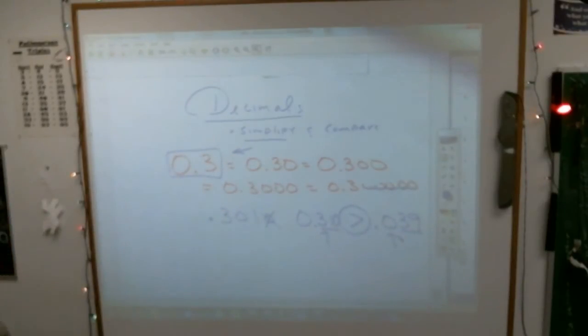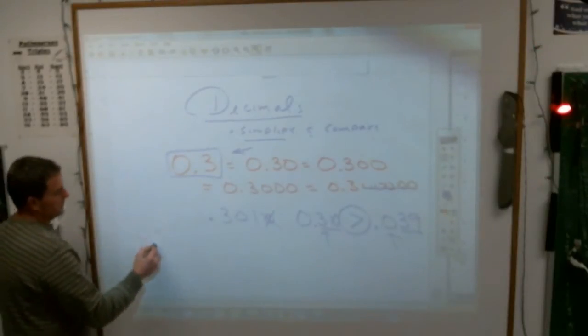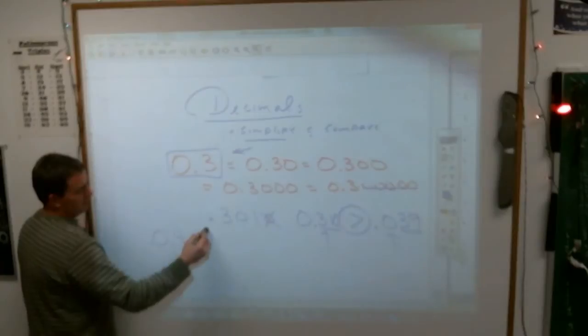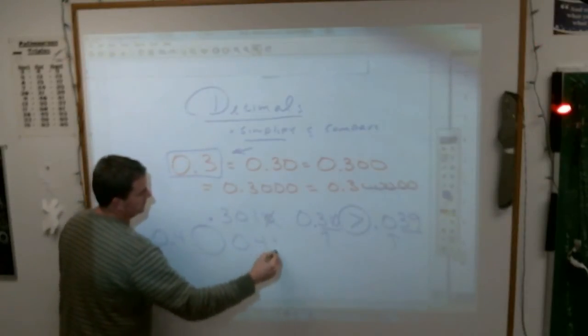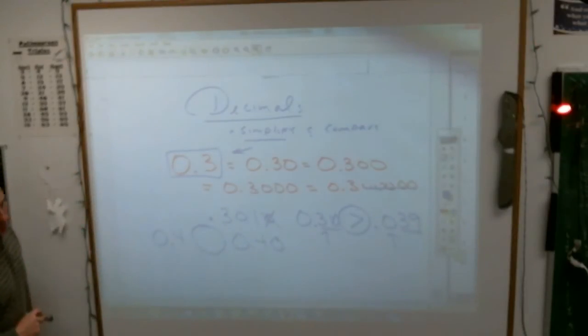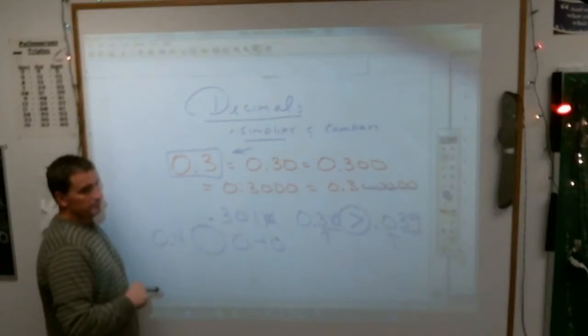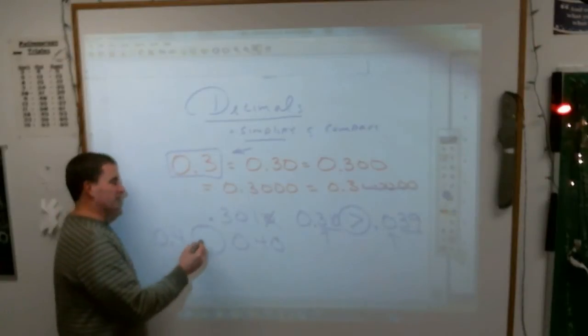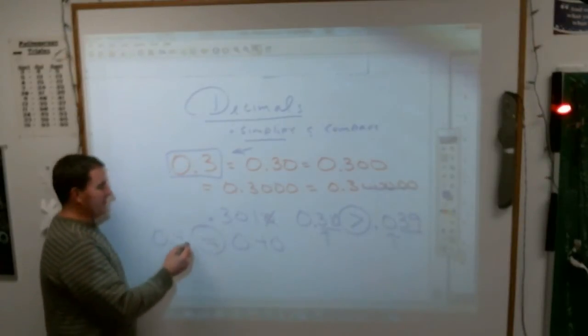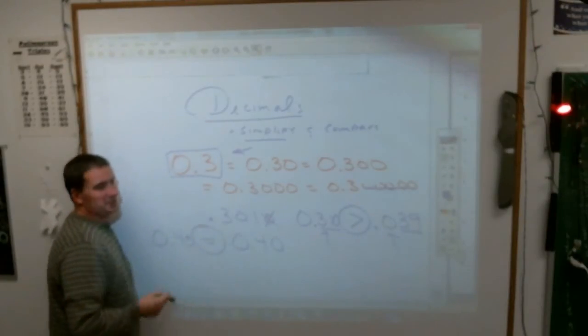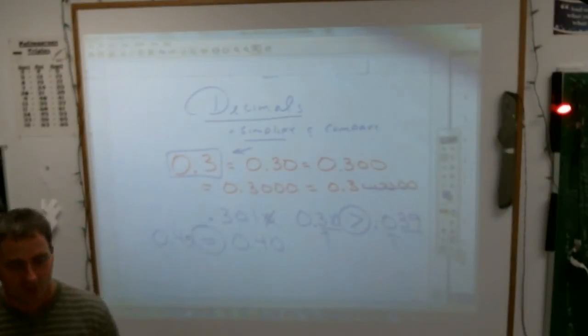A couple other examples of that might be, how about this one? Comparing 0.4 compared to 0.40, which one is bigger, Grace? 0.4 is bigger? Because when you put the 0 after that, it's 0.40 compared to 0.40. I knew we'd get it after enough questions there.